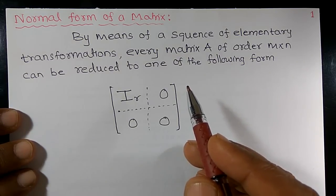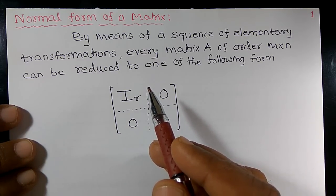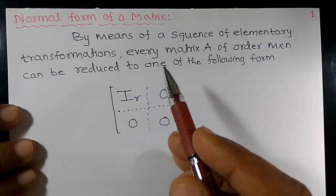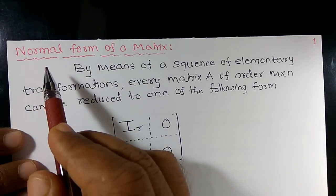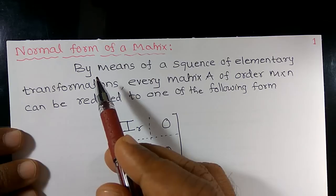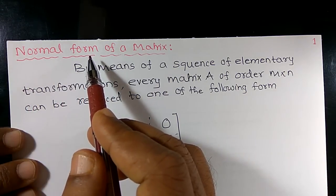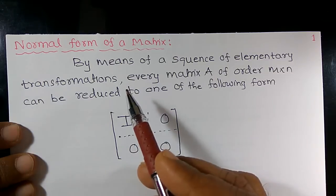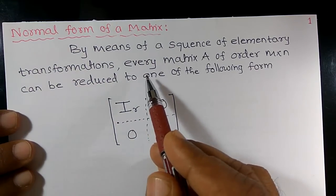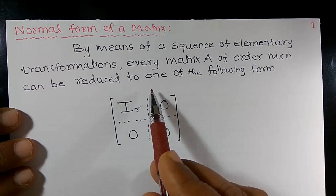Friends, in the last video we found the rank of a matrix by the inspection method. Now I want to use another method: the normal form of a matrix. They will give a matrix and ask us to reduce it to normal form. By means of a sequence of elementary transformations, every matrix A of order m×n can be reduced to one of the following forms.